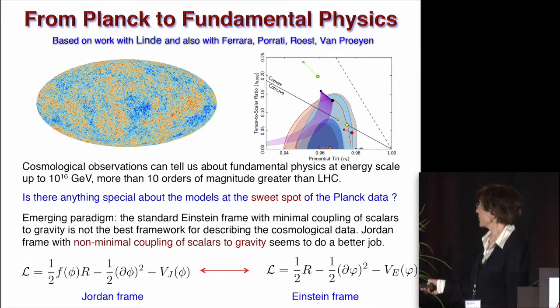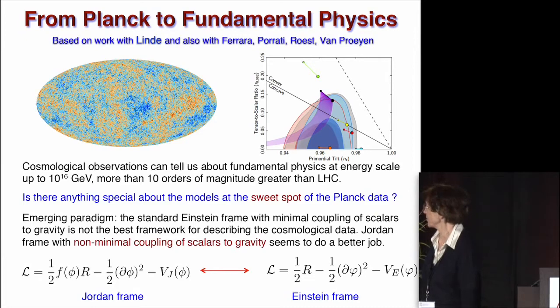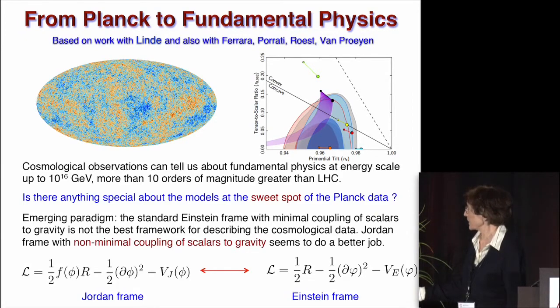Instead, if you start with something which is known as Jordan frame, with non-minimal coupling of scalars to gravity, which means that in front of Einstein term there is some particular term depending on scalars, and there is some kinetic term and something which is called Jordan frame potential. And this is where we find a rather interesting richness of possibilities of explaining the models which are sitting in this dark blue region of space.